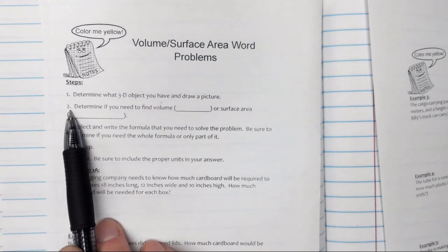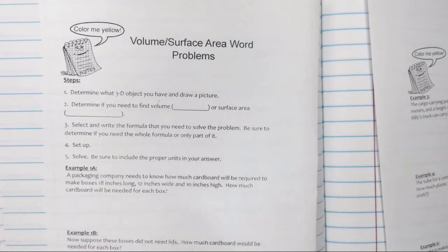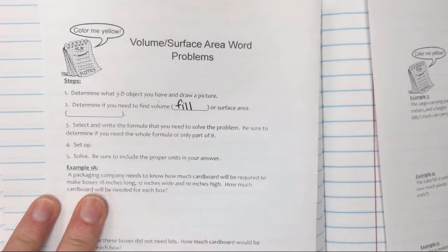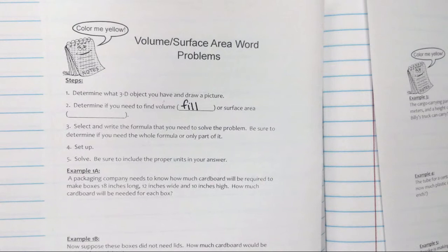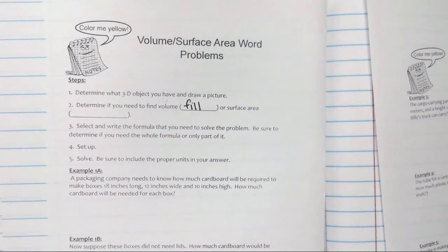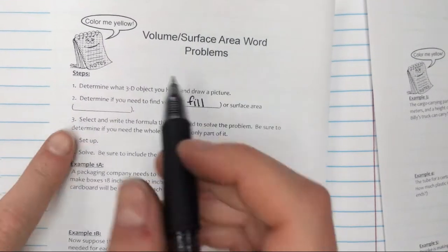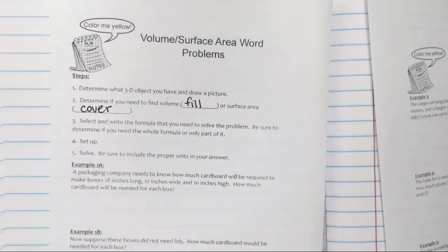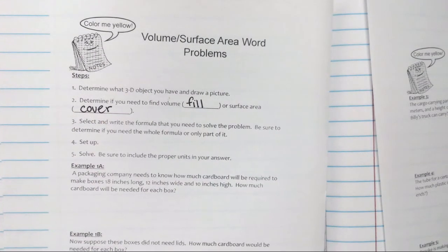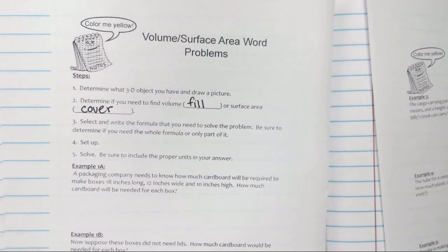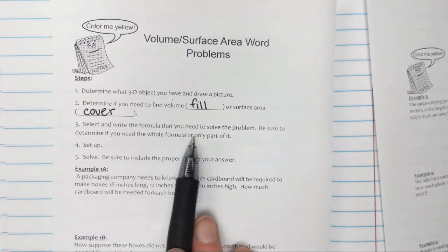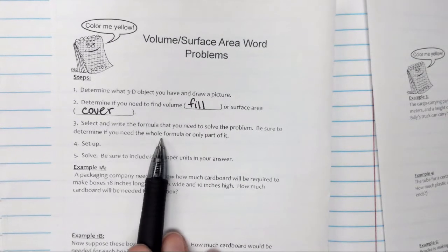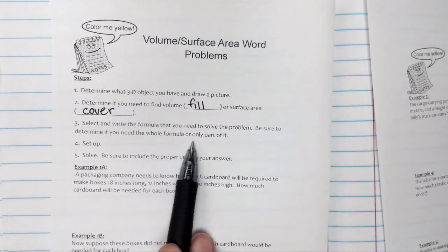Step two, determine if you need to find volume — that means if you're going to be filling up that three-dimensional figure — or surface area, which applies anytime you need to cover a three-dimensional figure. Step three is to select and write the formula you will need to solve the problem. Be sure to determine if you need the whole formula or only part of it.